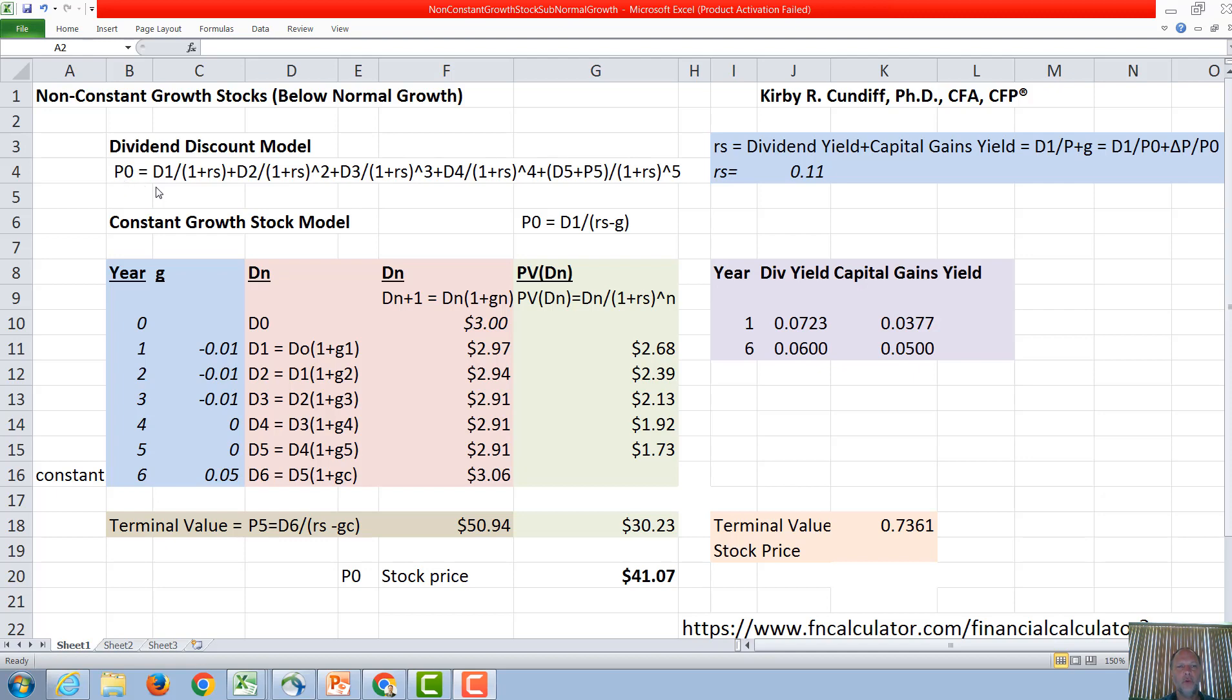In our circumstance, we're going to say these first dividends change at a non-constant rate, but then after year five they grow at a constant rate. So we will value our stock P0 right after the dividend D0 here was paid as D1 over 1 plus RS, D2 over 1 plus RS squared, etc., up through D5 over 1 plus RS to the fifth.